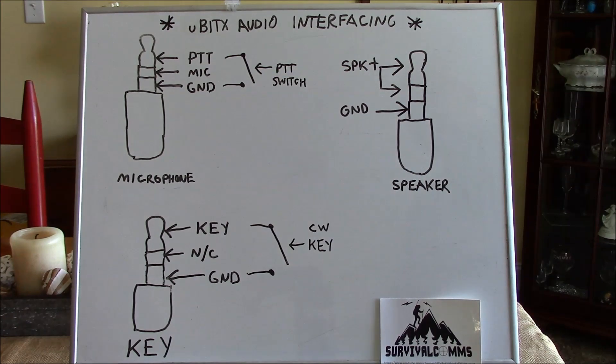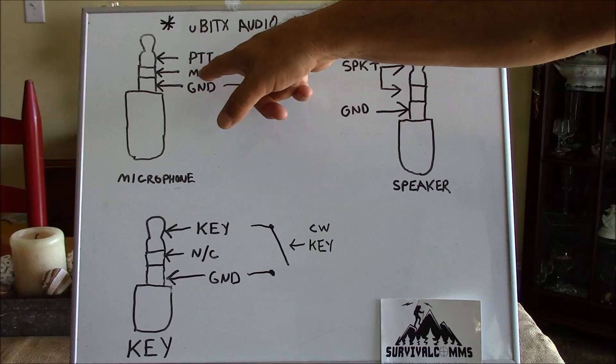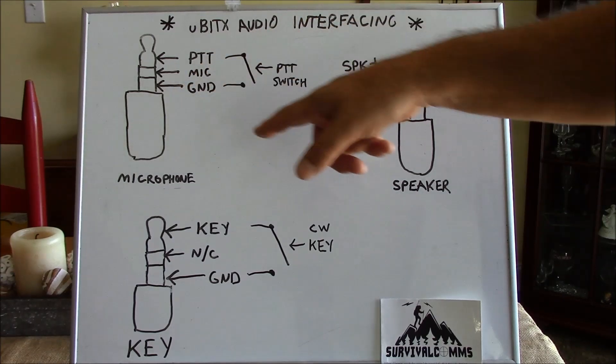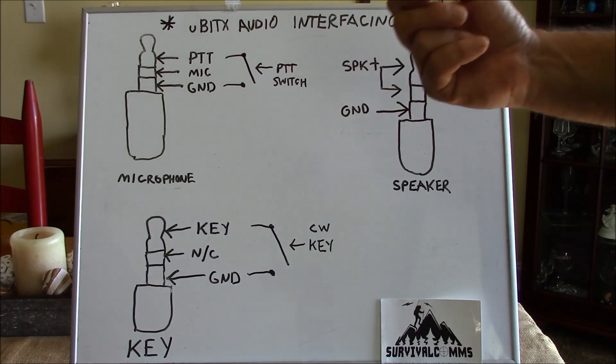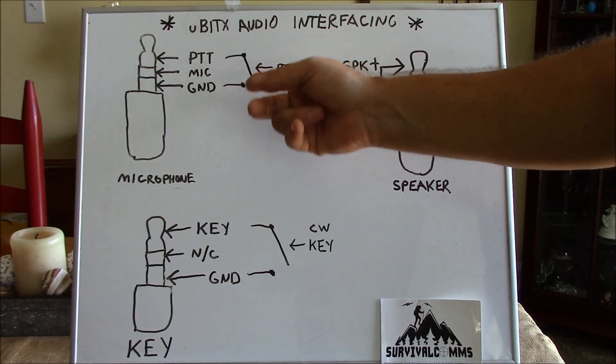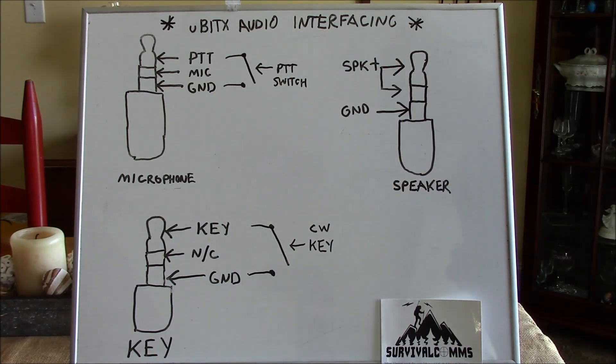On our microphone, our tip is our push to talk, our ring is our microphone element and our sleeve is our ground. Now when we toggle the radio into transmit mode what we're doing is essentially we're just closing the circuit between the push to talk connection and the ground and this toggles the radio in transmit.